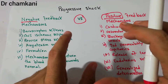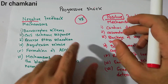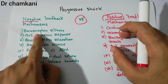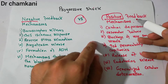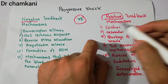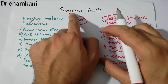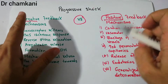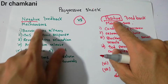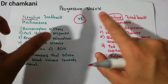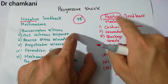But if the initial shock is very severe, then the negative feedback mechanisms won't be able to reverse the shock, and the positive feedback mechanisms will come into play — cardiac depression, vasomotor failure, and all these factors will keep on progressing the shock. So it is basically a tug of war, a competition going on between the negative feedback mechanisms and the positive feedback mechanisms.